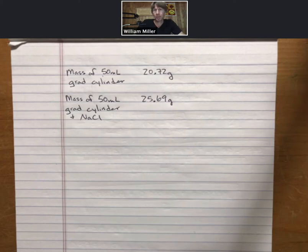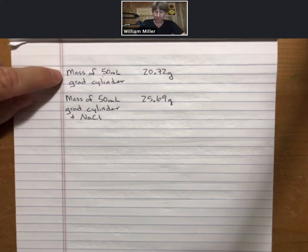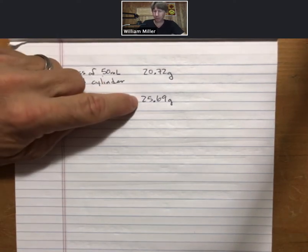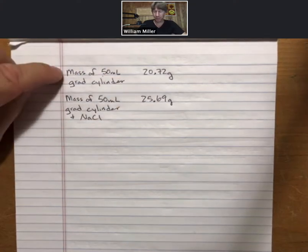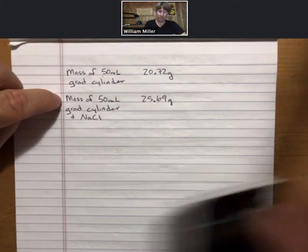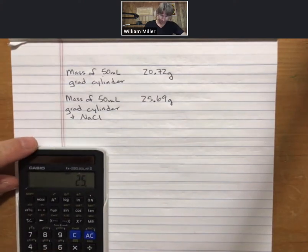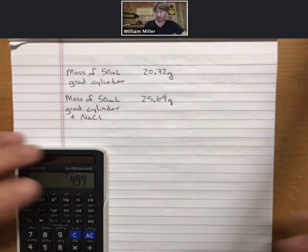This is Experiment 3, density of saline solutions. Calculate the molarity. From the experiment we've got that the mass of our 50 milliliter grad cylinder is 20.72 grams. We add the salts, we get a total of 25.69 grams. So the difference between these two is going to be the mass of our sodium chloride in our solution. I get 4.97 grams of sodium chloride.